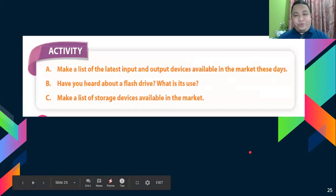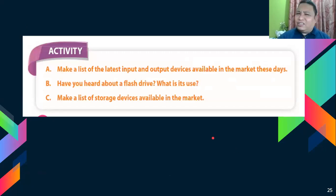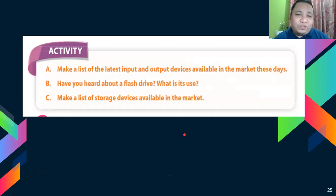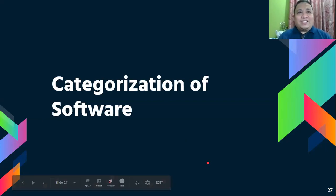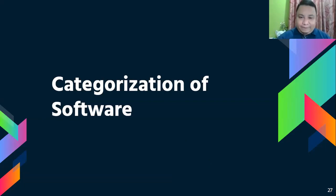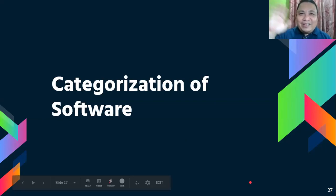Before we end this discussion, make a list of at least five input and output devices available in the market. We will end our discussion for today. For the next topic, it will be the categorization of software. Thank you for listening, and see you next meeting. Don't forget to subscribe to my channel and hit the notification bell. Bye-bye!